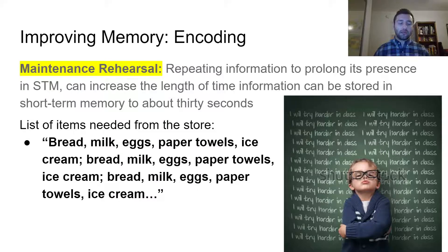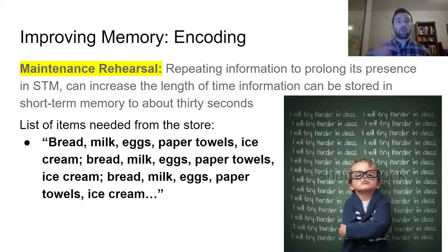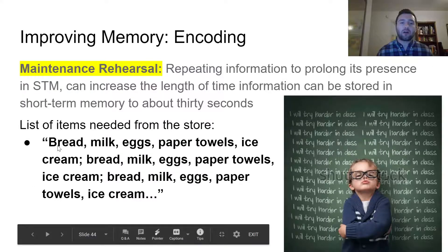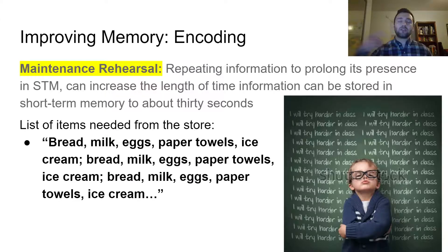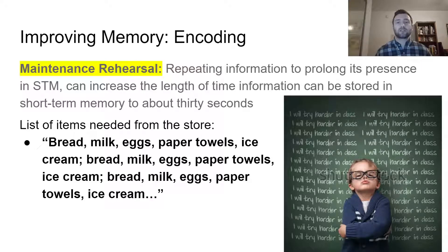For example, if you need to copy a number from your phone into a different app, you might say it over and over in your head as you switch. Same idea with a grocery list — if I need bread, milk, eggs, paper towels, and ice cream, I'm just going to repeat those items again and again until I get to the store. I'm just doing that repeatedly and eventually it sticks a little. A day or week later it's probably gone, but for short chunks of time it is useful.